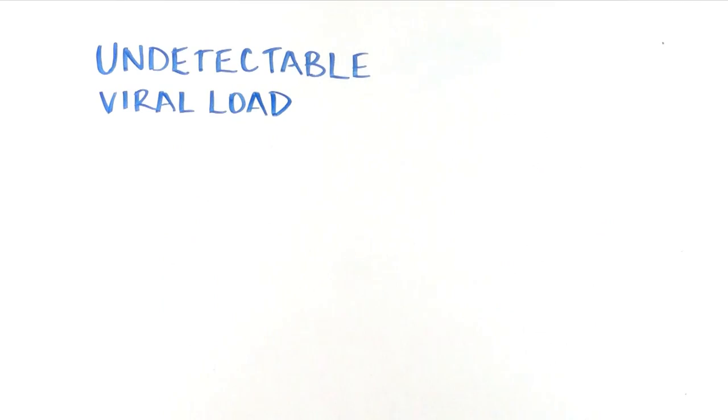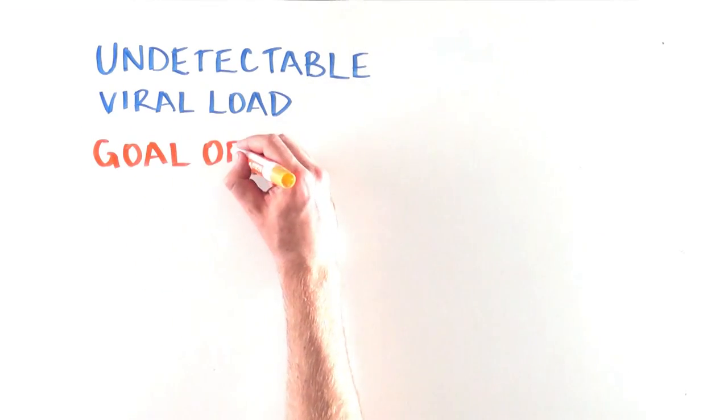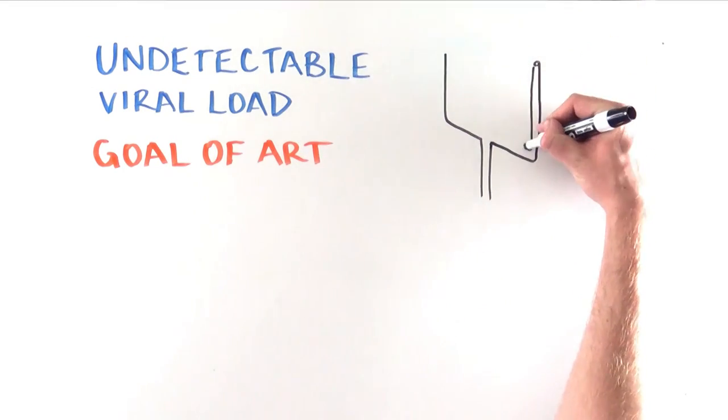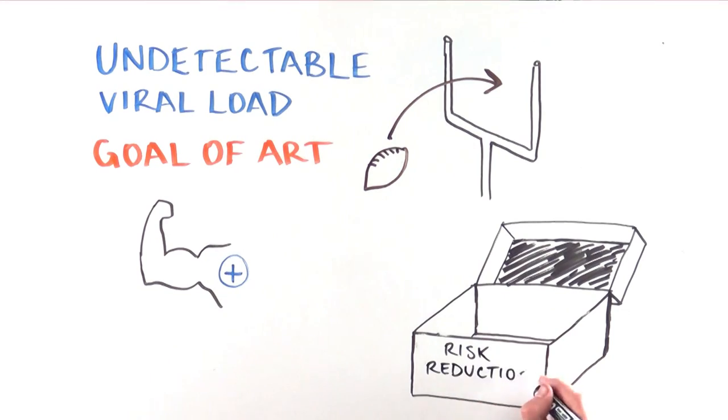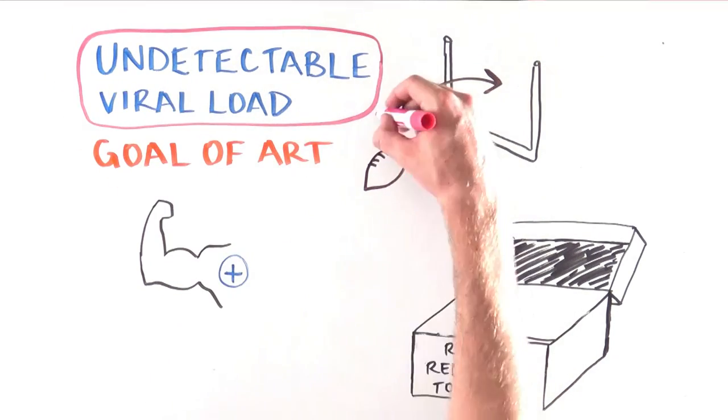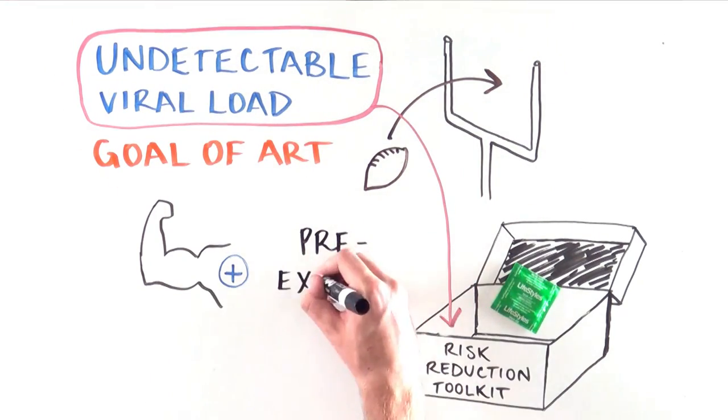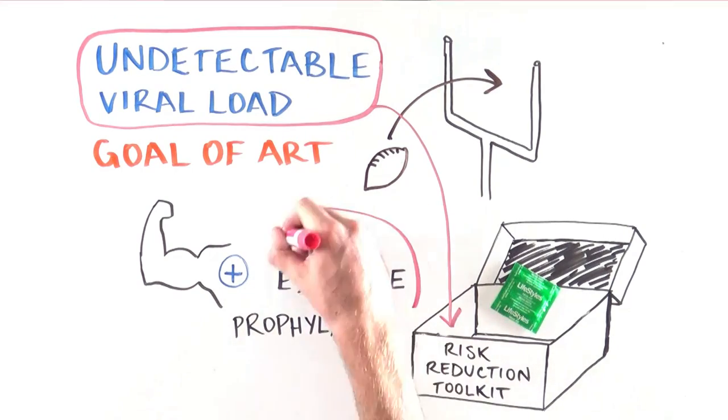Therefore, undetectable viral load is a central goal of antiretroviral therapy, to maintain the health of HIV-positive individuals, and is a promising new part of the HIV risk reduction toolkits, along with things like condoms and pre-exposure prophylaxis, which can protect against HIV.